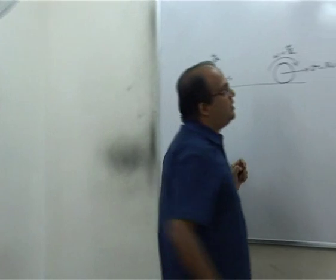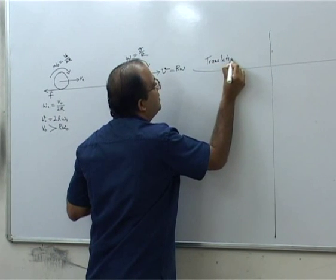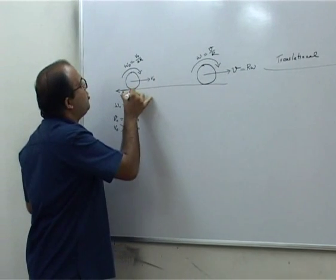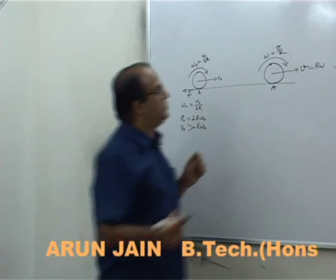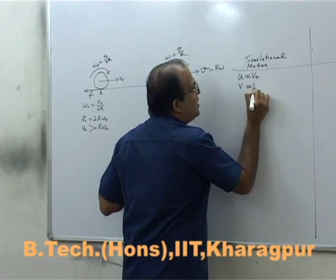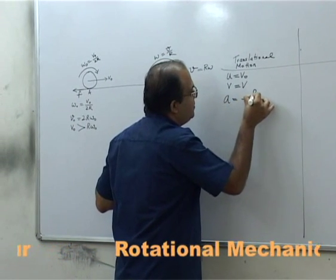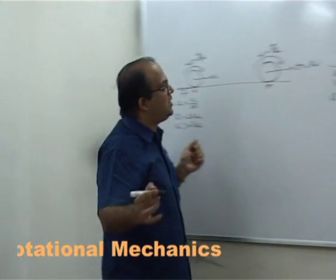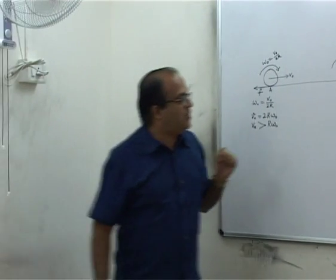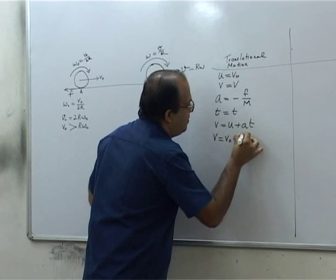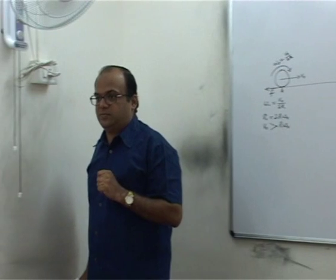This problem can be solved by two methods: by studying the translational motion and the rotational motion independently, and secondly by conserving angular momentum about point A. Looking at the translational motion of the ball, the initial velocity is v0, the final velocity is v, and the acceleration is caused by the friction force. So acceleration is minus f by m, giving v equal to v0 minus f by m times t.